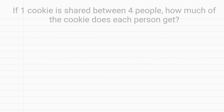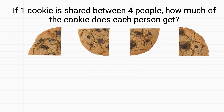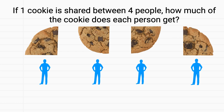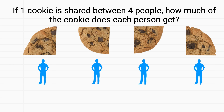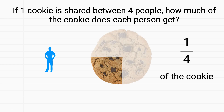In this problem, let's imagine our cookie. To share this with four people, I could cut my cookie into four pieces. Each person will get one piece of the cookie. But how much is each one of these pieces? If we imagine our full cookie, you can see that each of these pieces is one-fourth of the whole cookie.